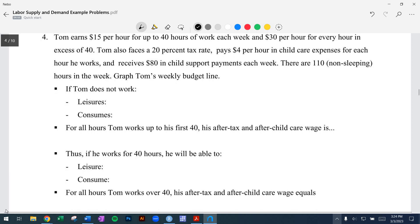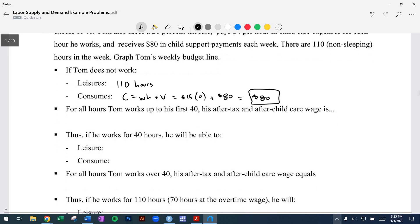Okay, so to graph the budget line, we can get a few steps. First of all, if he's not working at all, that means he's leisuring the entire time. That's 110 hours of leisure. Let's write out the formula: WH plus V. He earns his wage of 15, but he works zero hours. So zero hours of wage income, but he gets that $80 child care payment. So he will still get a child support payment. He will get $80 in consumption regardless.